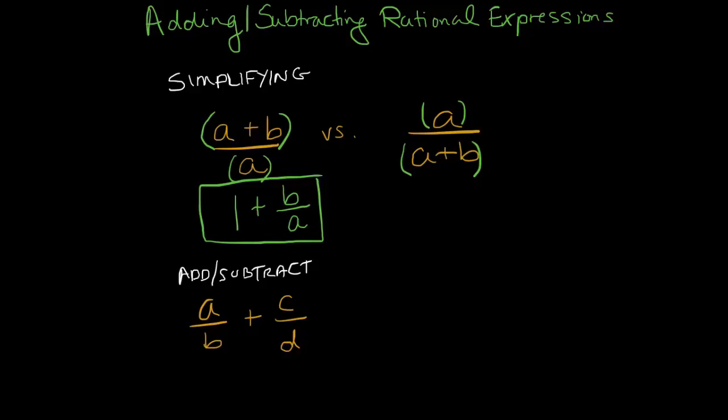I'm going to call that the LCD, the lowest common denominator. To do that I would multiply the first fraction by d over d, and the second fraction by b over b. Remember I'm really just multiplying each fraction by one, so I'm not changing their values. I'm just changing the way that they appear.